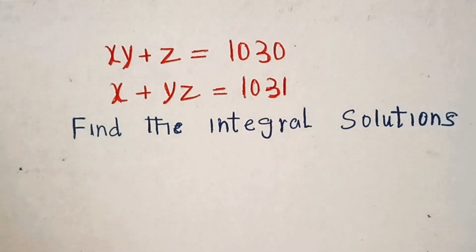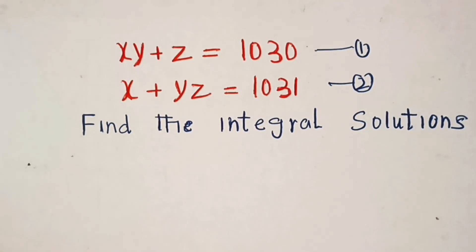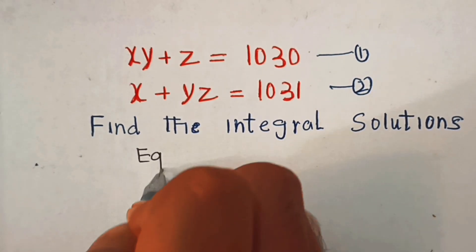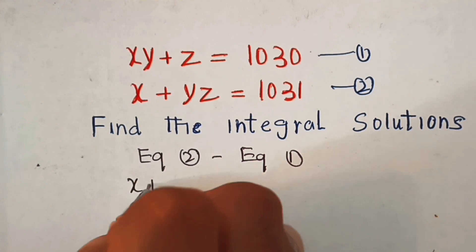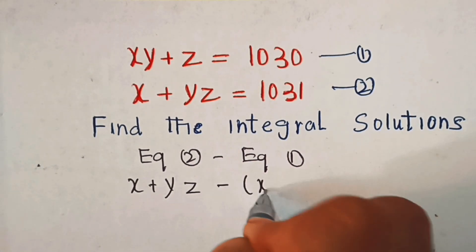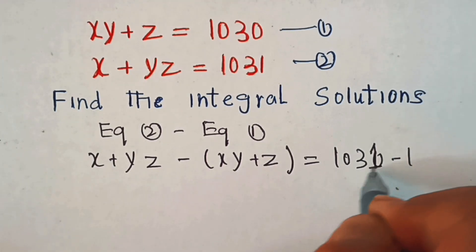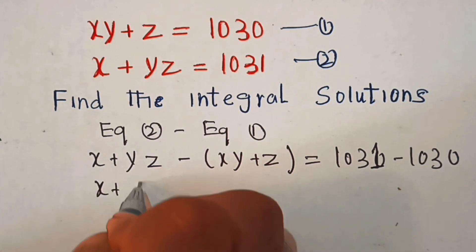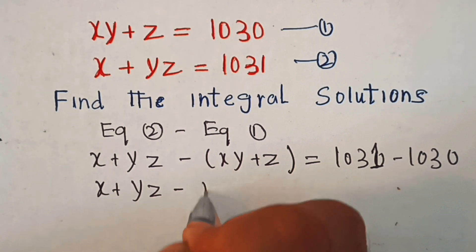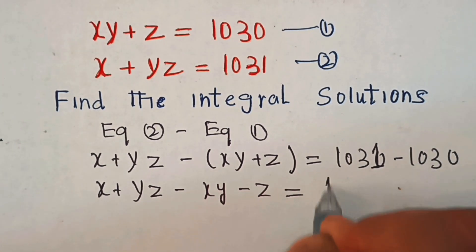Let's try this out. In the first step, we'll call the first equation number one and the second equation number two. Now we'll subtract equation one from equation two: x plus y times z minus x times y plus z is equal to 1031 minus 1030, which equals 1.